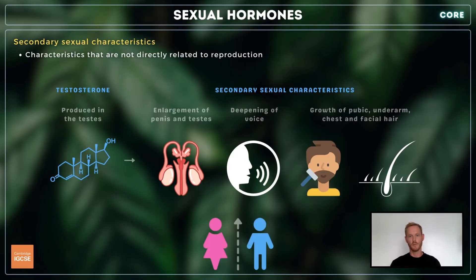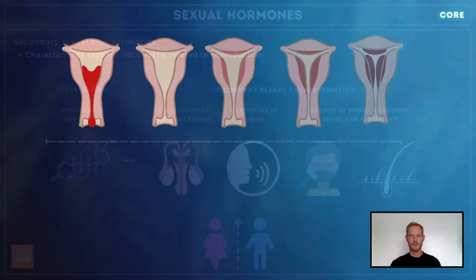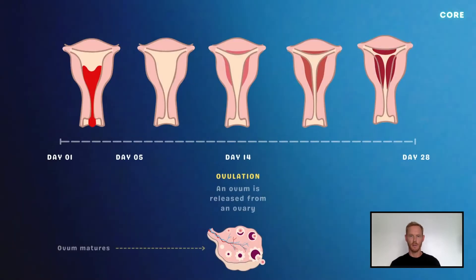In addition, both boys and girls experience a significant growth spurt during puberty. Next, you need to know about the menstrual cycle. In sexually mature females, the ovaries release an ovum around once every 28 days.